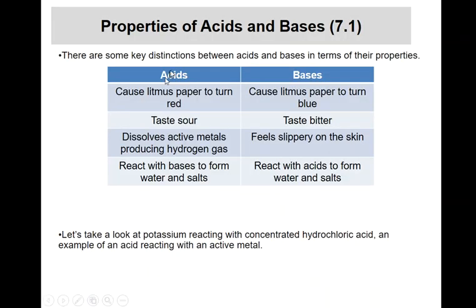For acids, acids cause litmus paper to turn red. You may have run into litmus paper before. There's a blue form and a pink or red form. If I take a piece of blue litmus paper and put it in the acid it'll turn red. If I take a red piece of litmus paper and put it in the acid it'll just stay red, it won't change at all.